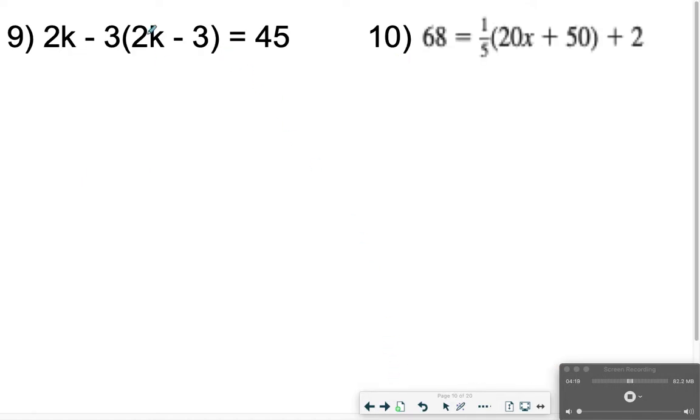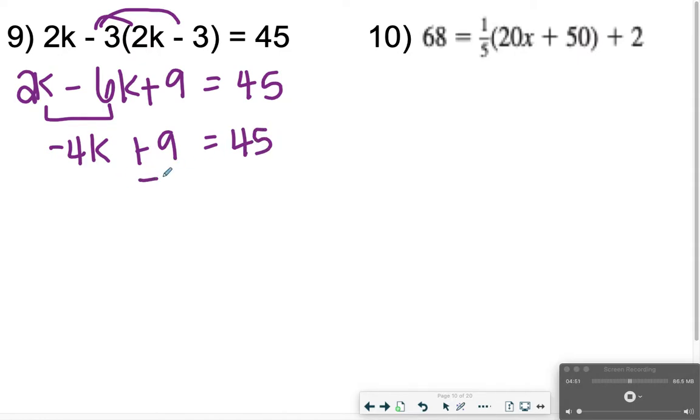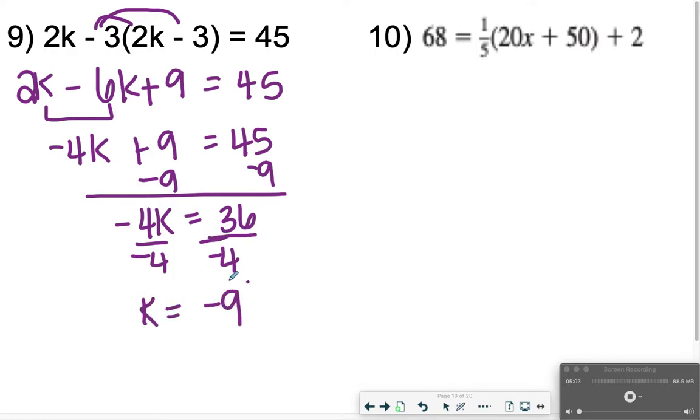Hopefully we're doing well so far. Here comes the doozies where you're having to distribute, and then combine like terms, and then use your two steps. We're distributing a negative 3. So I'm going to have 2k minus 6k plus 9 is equal to 45. 2k minus 6k, I'm going to go ahead and combine that to get negative 4k. So negative 4k plus 9 is equal to 45. I'm going to subtract 9 from both sides to get negative 4k is equal to 36. Divide both sides by negative 4. And k is equal to negative 9.